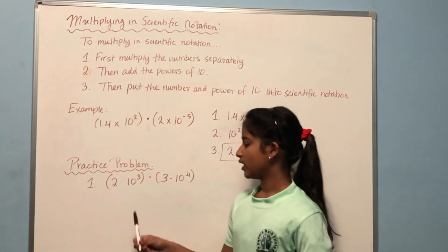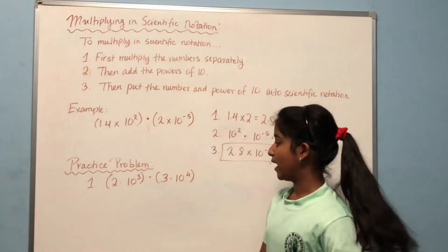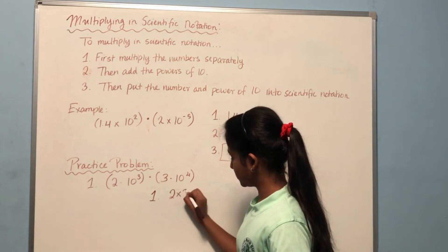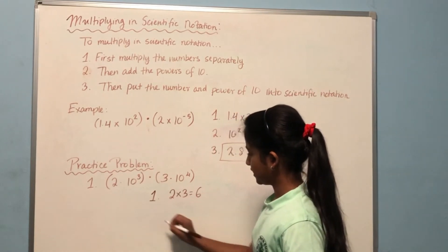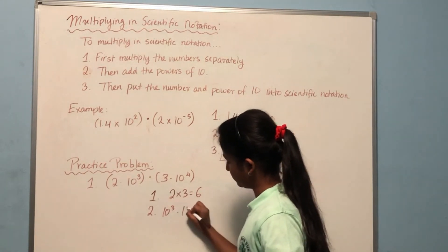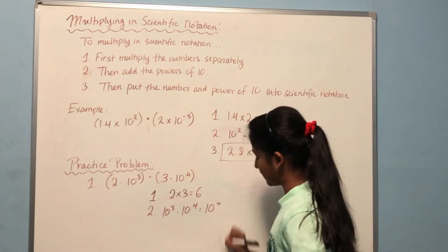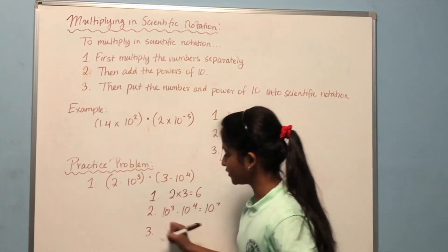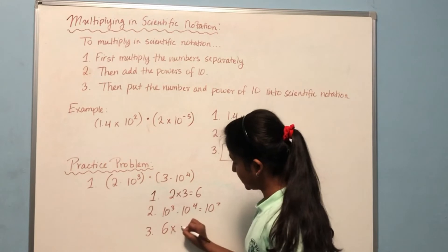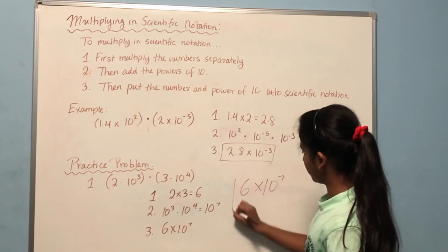Now let's do a practice problem: 2 times ten to the power of 3, times 3 times ten to the power of 4. First, multiply the numbers: 2 times 3 is 6. Second, add the exponents: 3 plus 4 is 7, so that's ten to the power of 7. Finally we put them together into scientific notation form — the answer is 6 times ten to the power of 7.